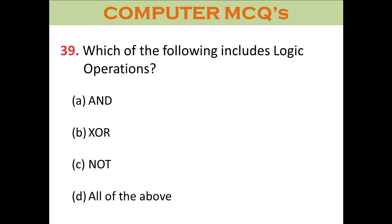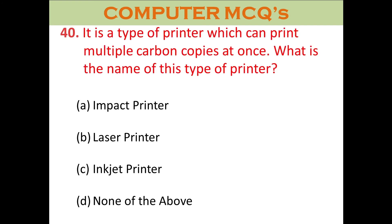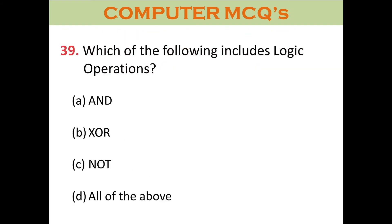Question thirty-nine: Which of the following includes logic operations? A. AND. B. OR. C. NOT. D. All of the above. The right answer is D: All of the above.